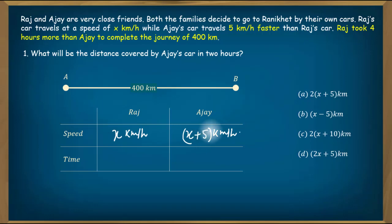If Ajay's speed is x plus 5 kilometer per hour, then in 2 hours he will travel 2 times x plus 5 kilometers, which is 2x plus 10 kilometers. This is the answer.